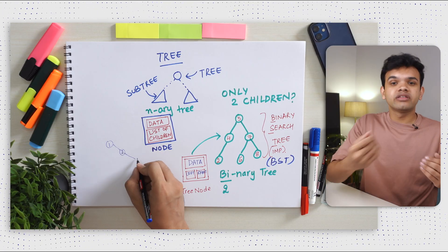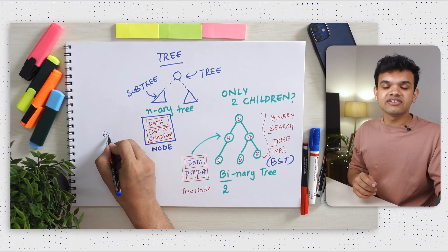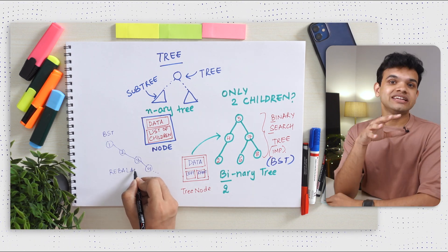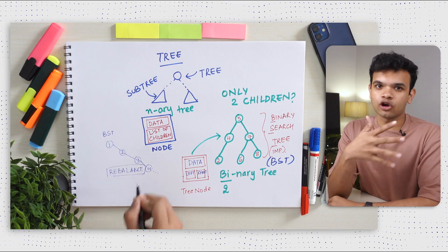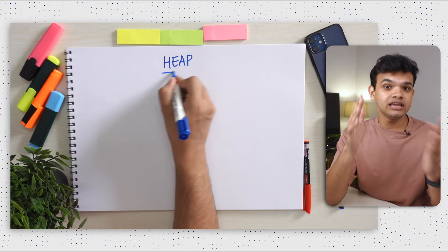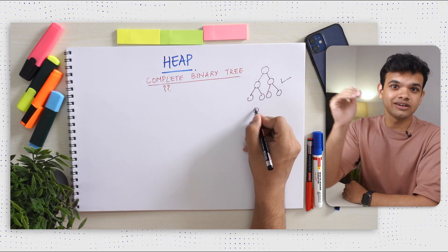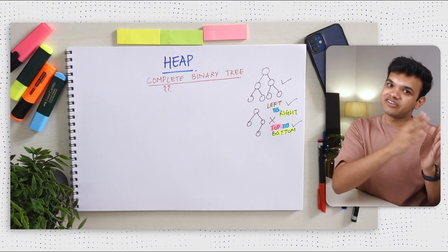A BST is really famous for keeping data sorted — whenever we give it new data, it adds it to the tree in the correct position. But there's a problem: what if we only give it increasing numbers? It will create a node, then a right child, then another right child, creating an imbalance. So we need to rebalance this tree to make it more optimized.